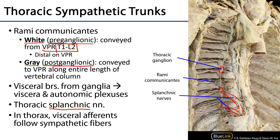Splanchnic is Greek for viscera or organs. These thoracic splanchnic nerves descend the thorax, pierce through the crura of the diaphragm, and ultimately synapse in pre-aortic ganglia — so named because they are anterior to the aorta, as opposed to the paravertebral ganglia of the chain. It also bears noting that visceral afferent fibers associated with sympathetics within the thorax are going to conduct visceral pain perceptions.